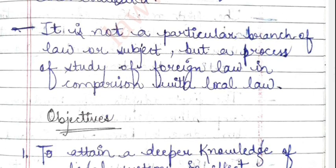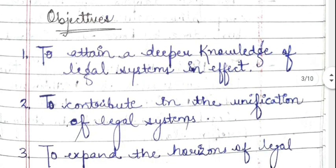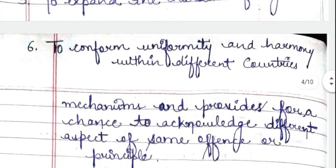Now we will talk about the objectives of comparative law — why we do the comparison. First objective: to attain a deeper knowledge of legal systems in effect. We are studying comparative law and different legal systems to attain deeper knowledge. Second objective: to contribute to the unification of legal systems. We are studying different countries' features, concepts, differences and similarities in different legal systems, contributing towards their unification.